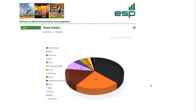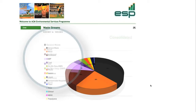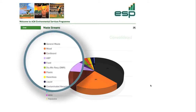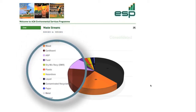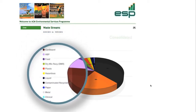The waste streams report can be easily generated for each individual site and can be easily compared, providing pie charts and a date range field. It's ideal for monthly, quarterly and yearly reports.